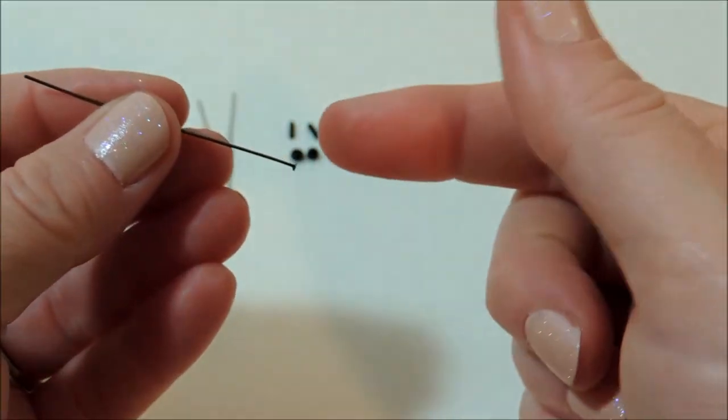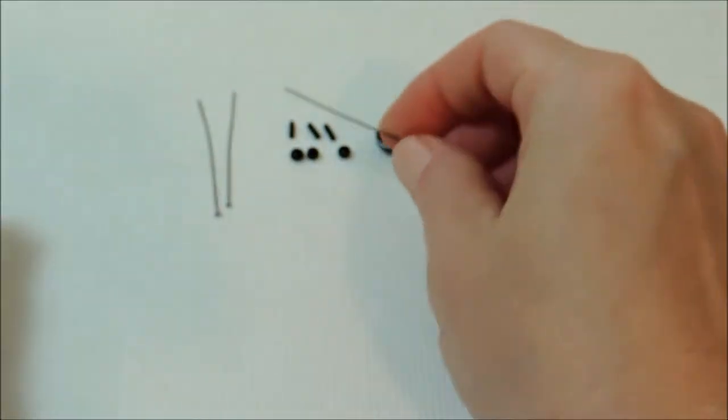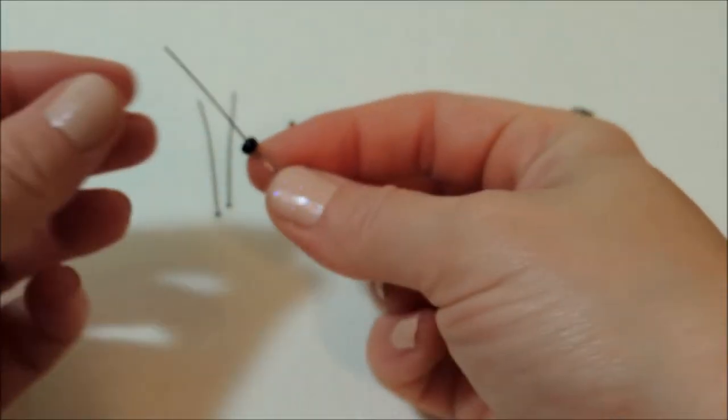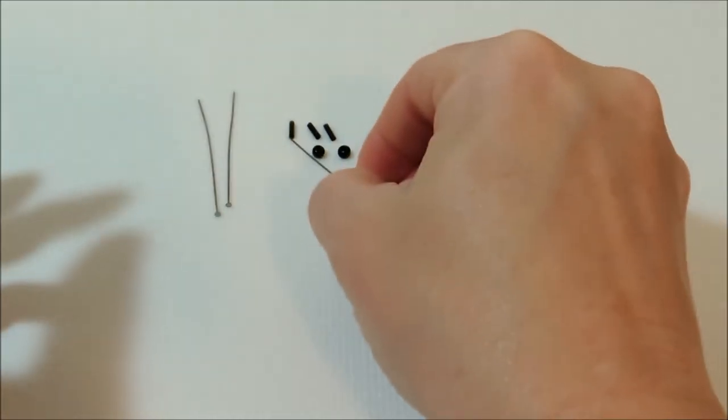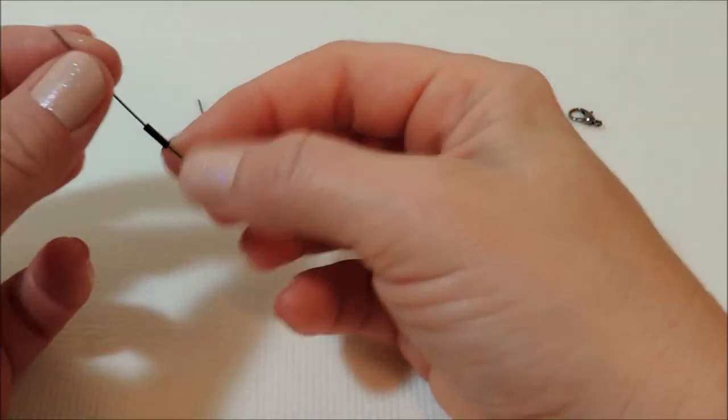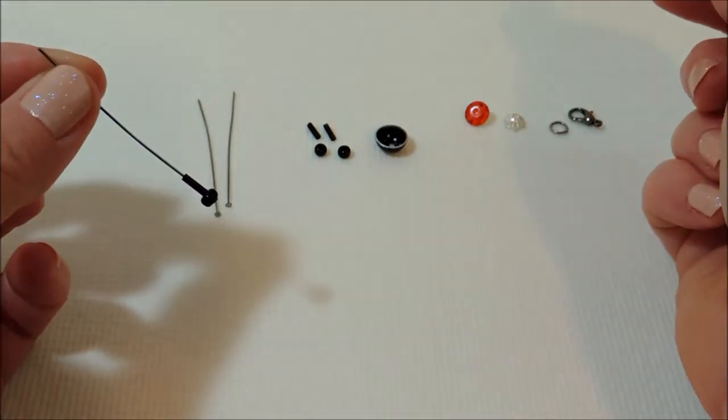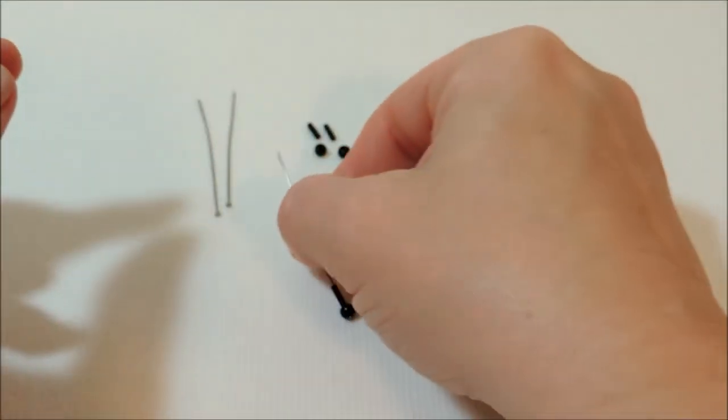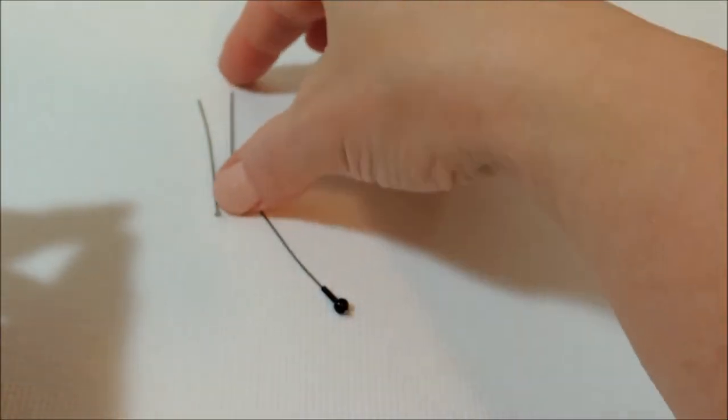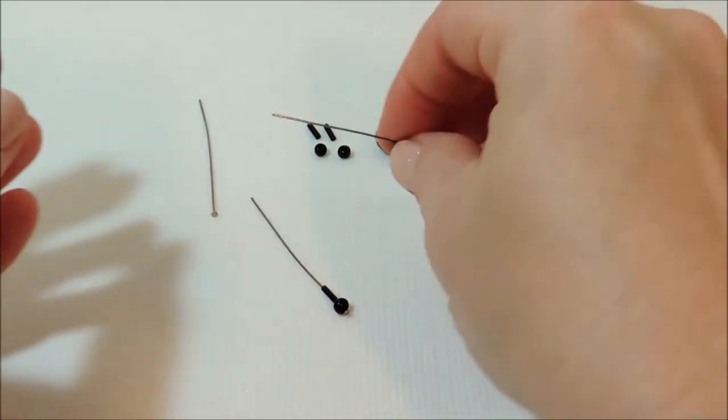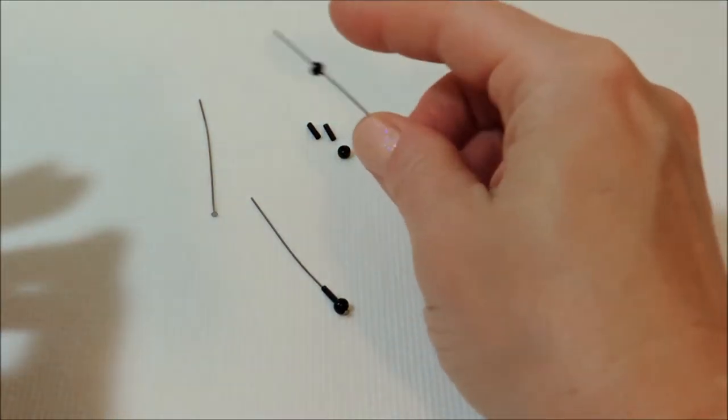So to get started, we're going to take each of our three head pins and on each one we're going to put a number six seed bead and one of our two by seven millimeter bugle beads. And those will become the legs of our barbecue grill.